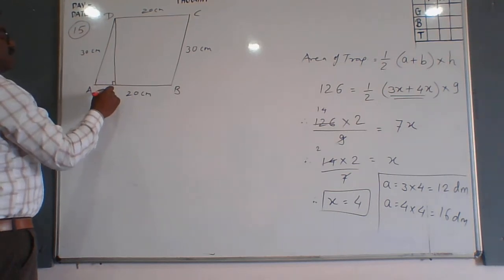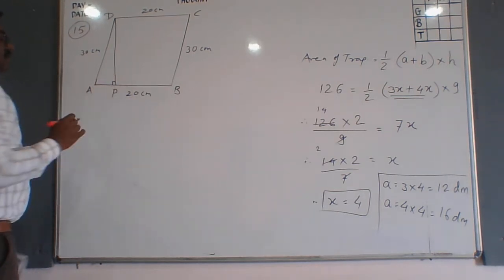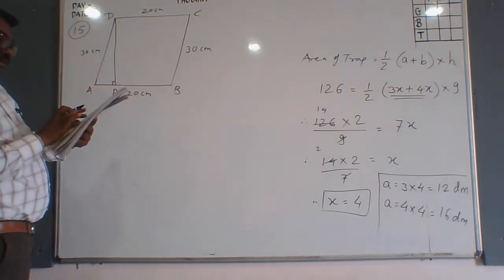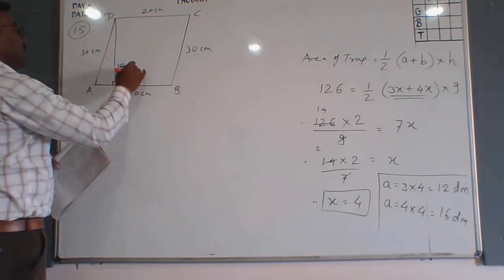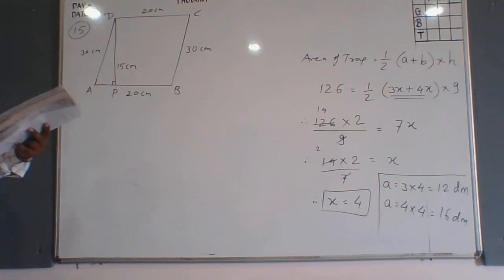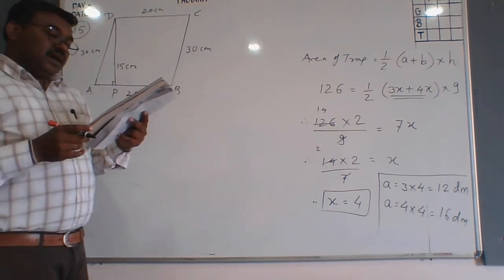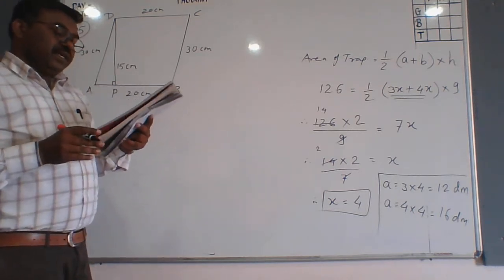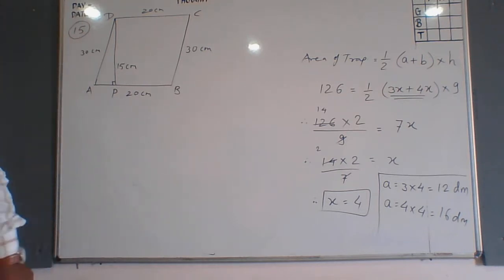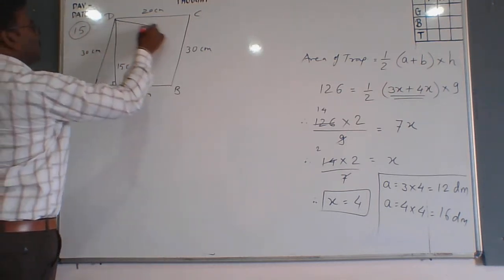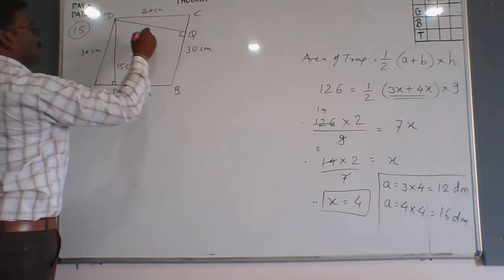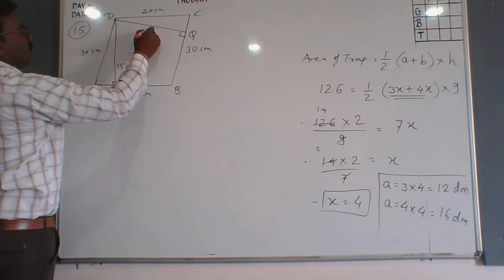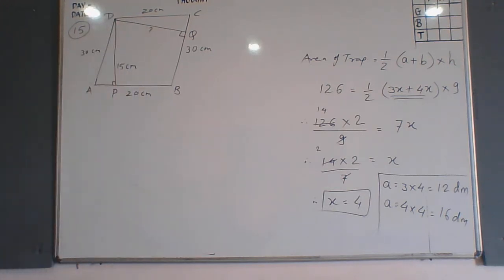The distance between the shorter sides is 15 cm. The length of DP is 15 cm. We want to find out the distance between the longer sides, which we call DQ.